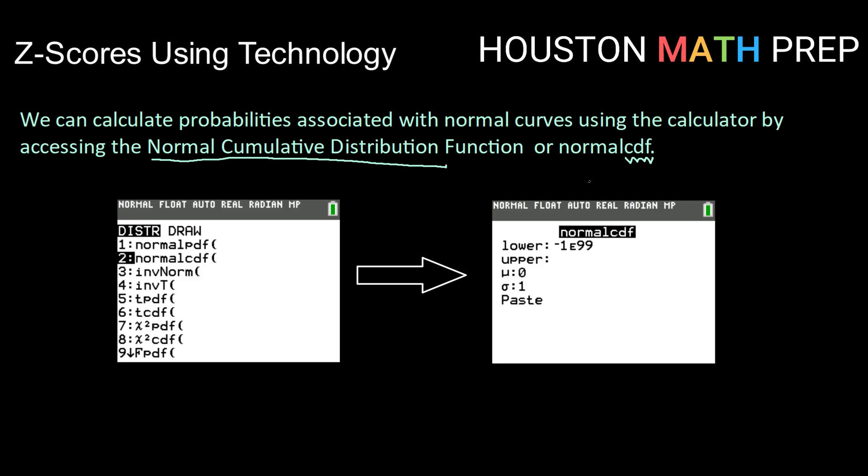This function is found underneath your distribution menu if you're using a TI calculator and it is option 2, the normal cumulative distribution function or normal CDF. When you bring that up on a TI-84 or above you should have a menu that looks like this. It's asking you for your lower boundary for your area, your upper boundary for your area, the mean of the distribution that you're working with, the standard deviation of the distribution that you're working with, and then once you've filled all those in you'll select paste.